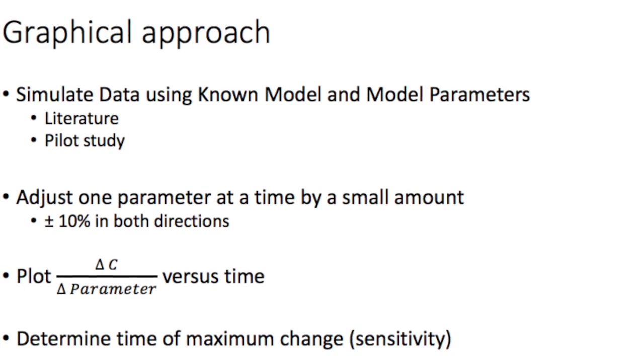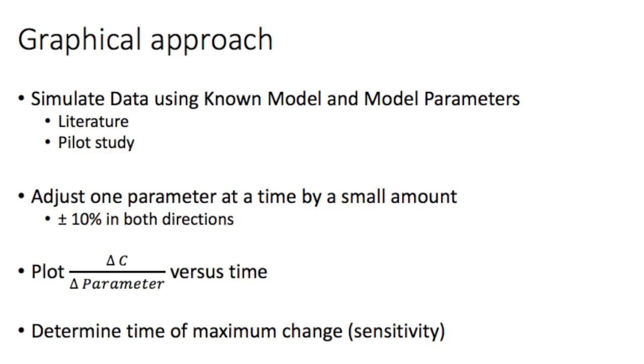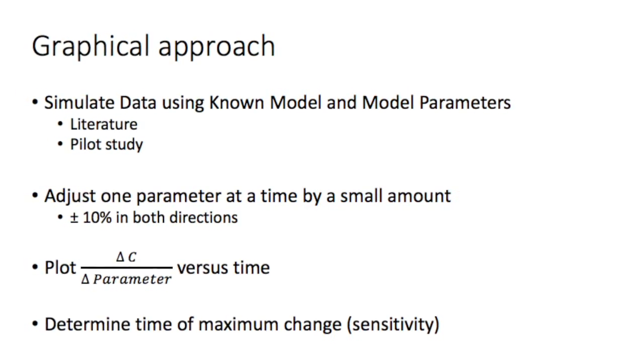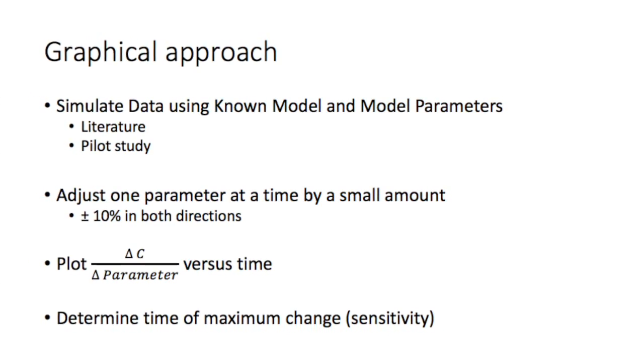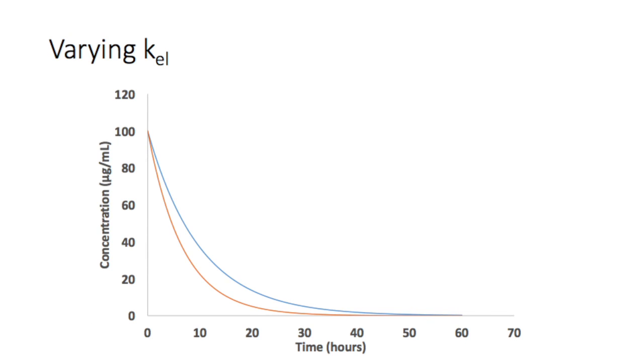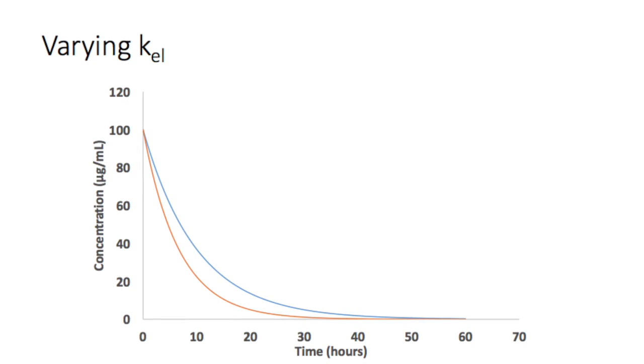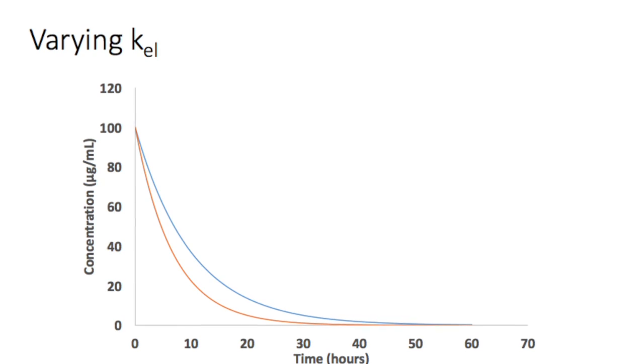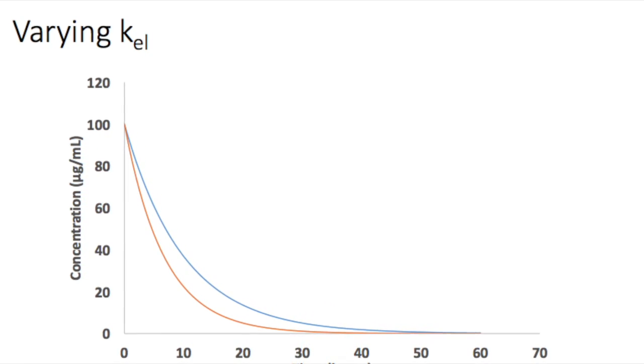The graphical approach to finding the optimal times for blood sampling involves simulating data using a known model and parameter values, which you can get either from the literature or a pilot study. You can do this using either Excel or a software program like Phoenix. Then the next step is to vary the value of the parameters one at a time by a small amount, say 10%, and then rerun the simulation. And what you get is two plasma time concentration curves for the two different values.